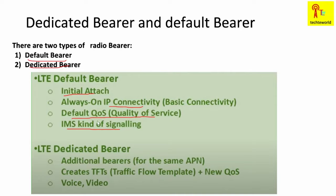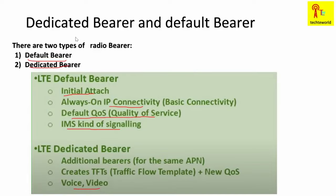The LTE dedicated bearer is an additional bearer that exists alongside the default bearer. It can be for the same APN only, and it creates a traffic flow template with new QoS if the UE is in need of new QoS. While the default bearer is used for IMS signaling, with the help of the dedicated radio bearer we can use it for voice and video as well.